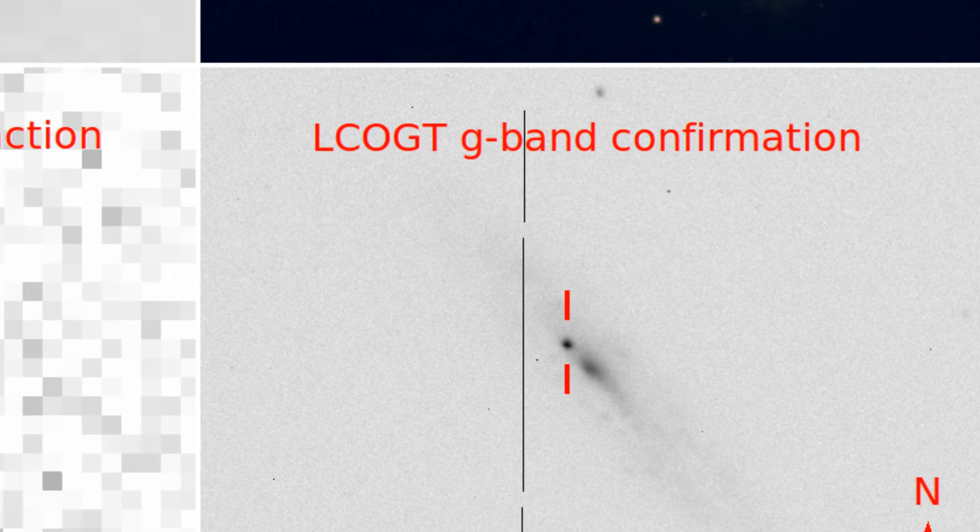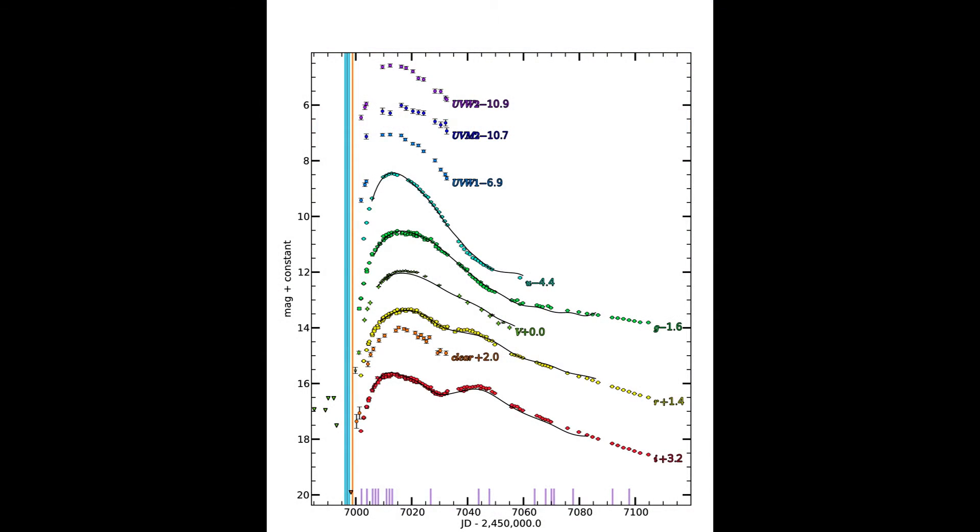We then classified this object as a Type 1A supernova less than a day and a half later. In this paper, we present new pre-discovery data as well as follow-up observations covering 100 days after discovery.